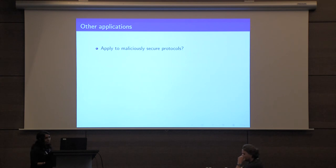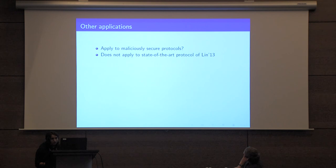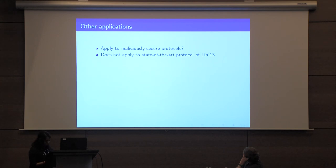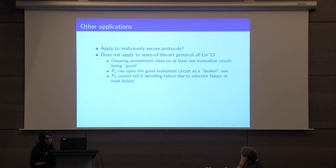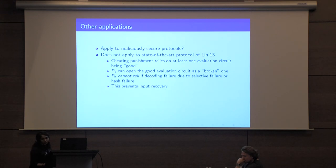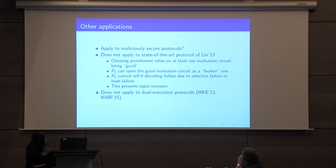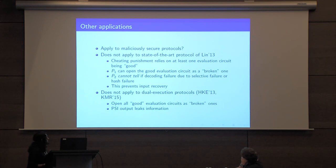Our free hash construction does not apply to the state-of-the-art protocol of Lindell 2013, and in general to protocols using the forge-and-lose technique, because in those protocols the cheating punishment phase relies on at least one evaluation circuit being good. Since P1 can open a good evaluation circuit as a broken one with the free hash construction, P2 cannot tell if a decoding failure is due to a hash failure or a selective failure attack, effectively preventing input recovery. It also does not apply to protocols in the dual execution setting, since a cheating P1 can open all good evaluation circuits as broken ones, and the output of a private set intersection could potentially leak bits of P2's input.